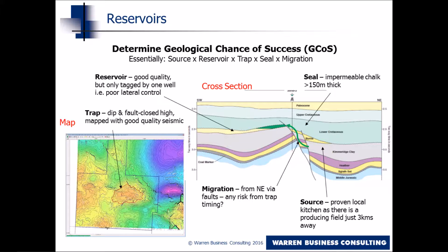However, this exercise is not like tossing a coin where there is only one action and two possible outcomes. In fact, the presence of oil and gas in a reservoir depends mainly on five separate factors.